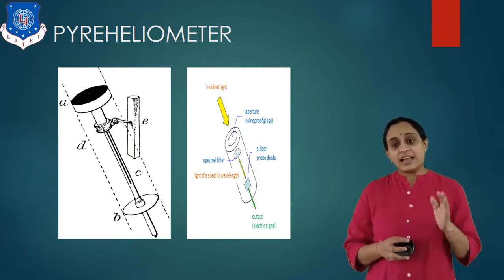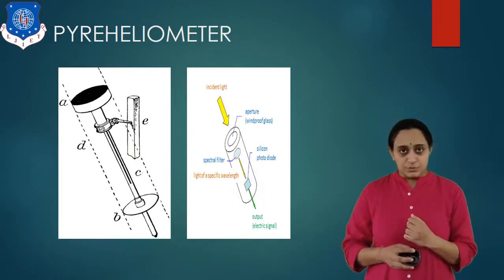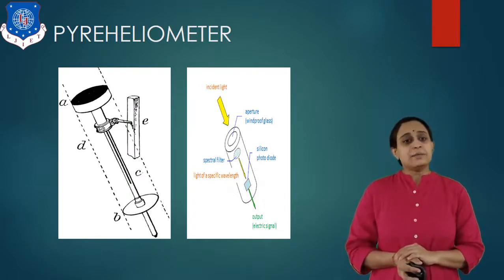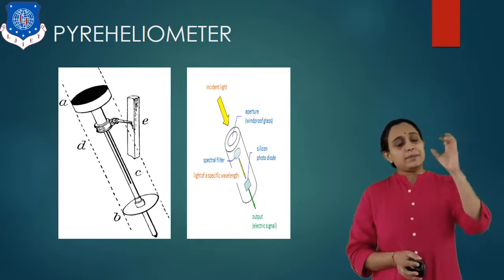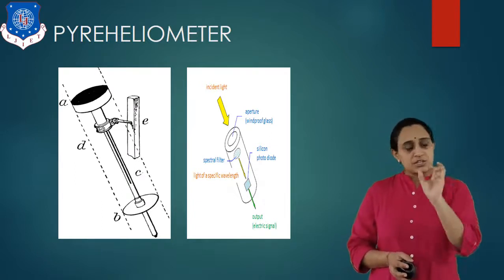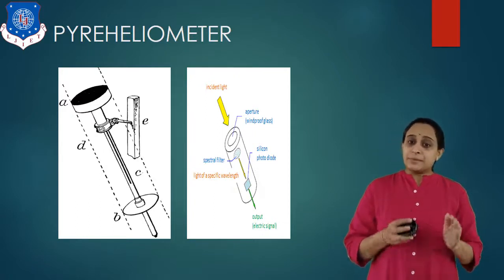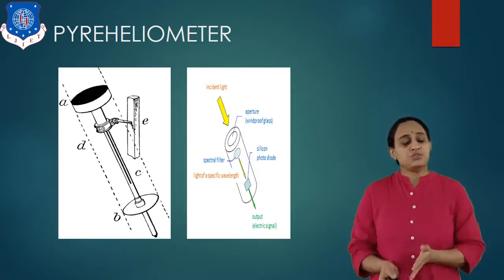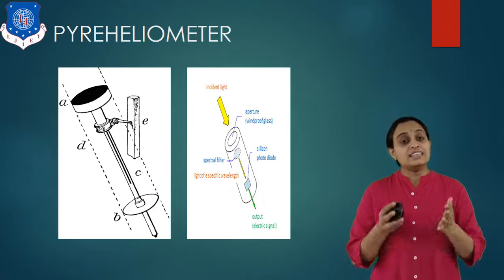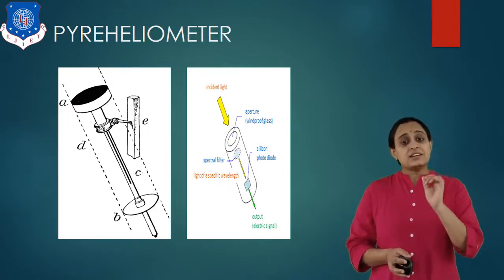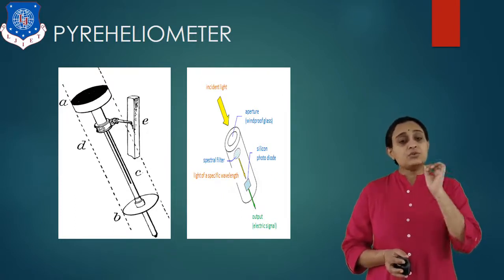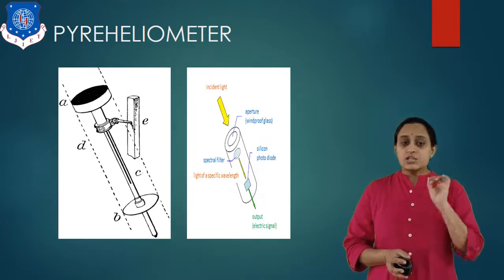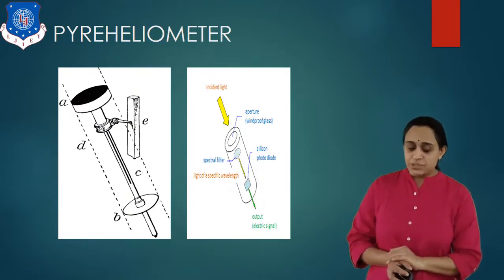Solar radiation enters through the calorimeter tube, which is in the wooden box, and is absorbed by the black and silver disc. The temperature rises and the rate of change of temperature is recorded in a series of 2-minute cycles. This is the periheliometer.